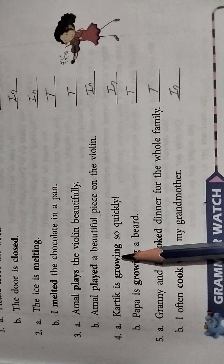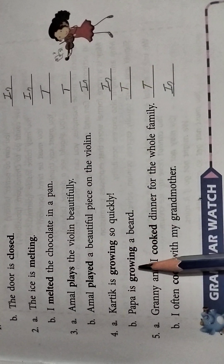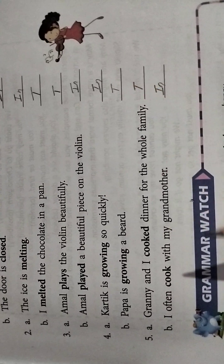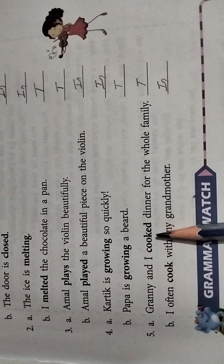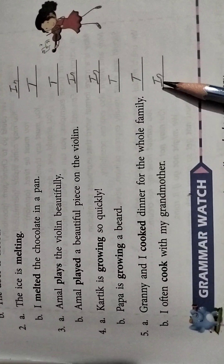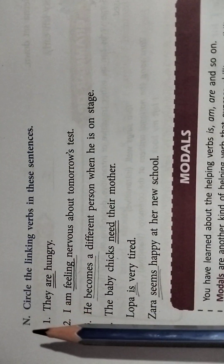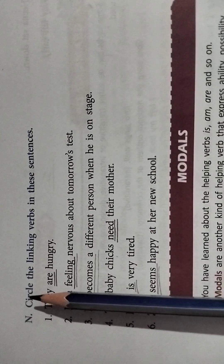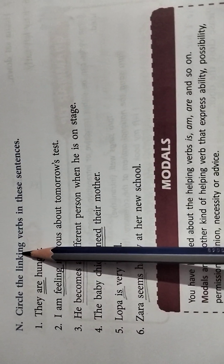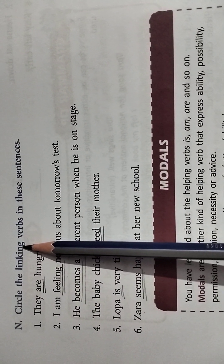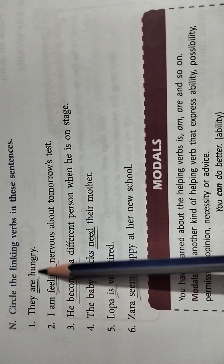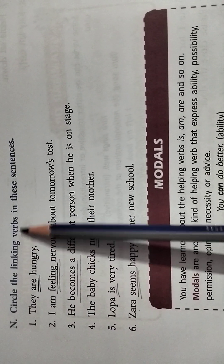Growing is used as intransitive in the first sentence and growing is used in the second sentence as a transitive verb. Cooked is transitive and cook is used as intransitive verb. Exercise number N: circle the linking verbs in these sentences. A linking verb needs a complement to complete its sentence — that is called a linking verb.